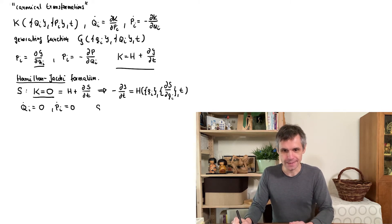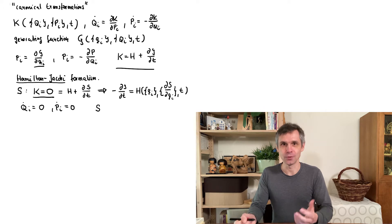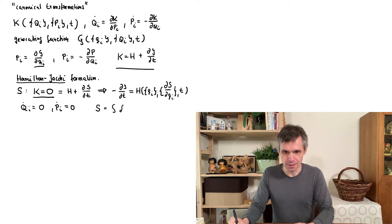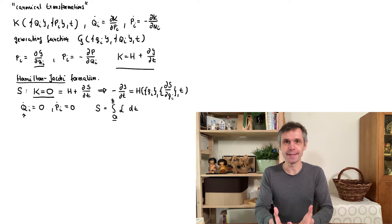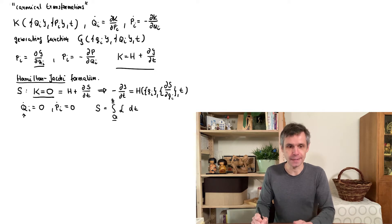Namely this function S here is exactly the action that I introduced above. So it is the integral over the Lagrangian over time from our initial conditions to our final conditions. And furthermore, this Hamilton-Jacobi equation is directly related to the Schrödinger equation in a certain approximation. And this is obtained in the following way.